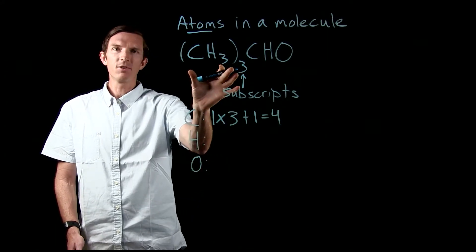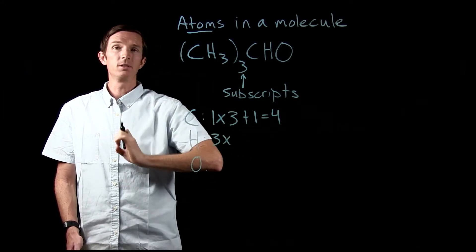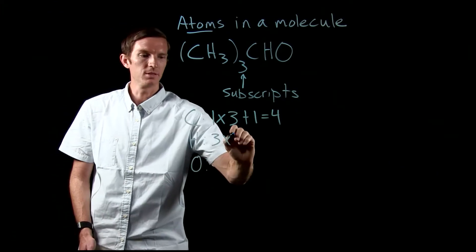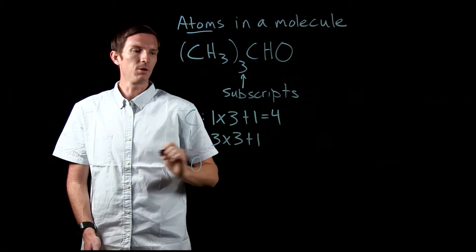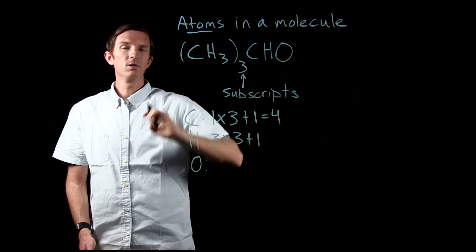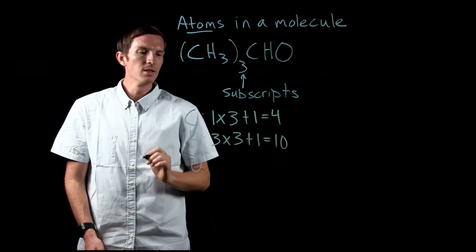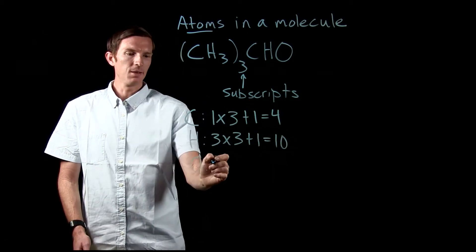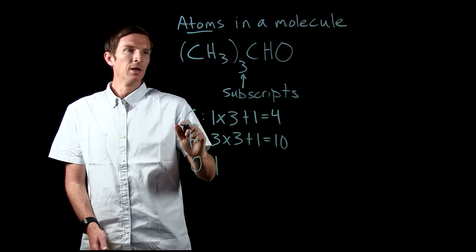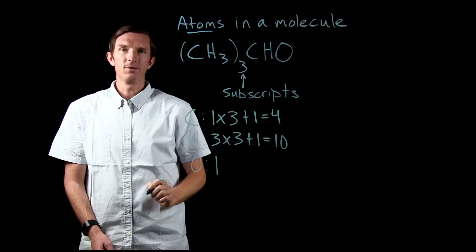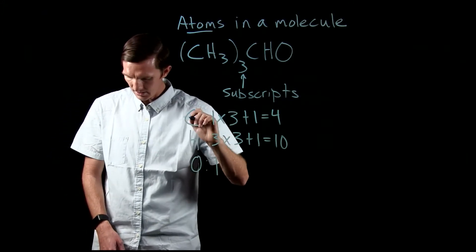For hydrogen, inside the parentheses we have three hydrogen atoms, and we have three of what's inside those parentheses, giving us nine. Then we have one more hydrogen outside — and remember, if there is no subscript, that means there is one of that atom — so we have a total of ten hydrogen atoms. For oxygen, we just have one oxygen atom, so there is one oxygen atom in this molecule.